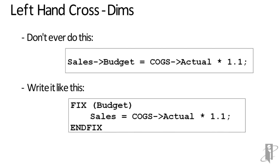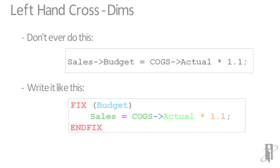The better way to write this would be to fix on budget, and then say sales equals cost of goods sold->actual times 1.1. This only pulls budgeted sales into memory, and doesn't pull in sales forecast or sales what-if.